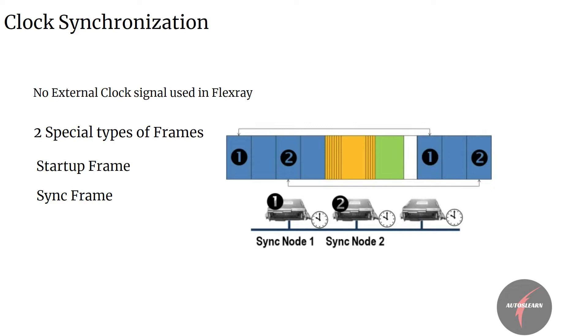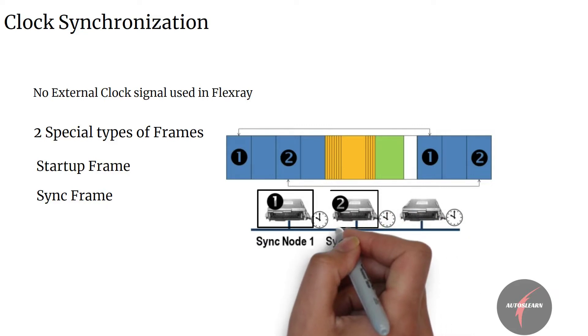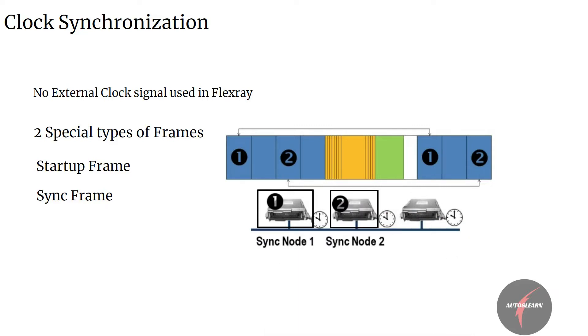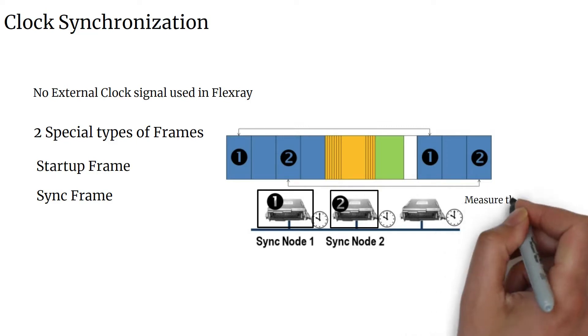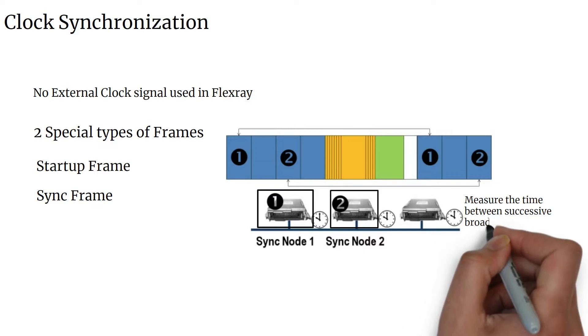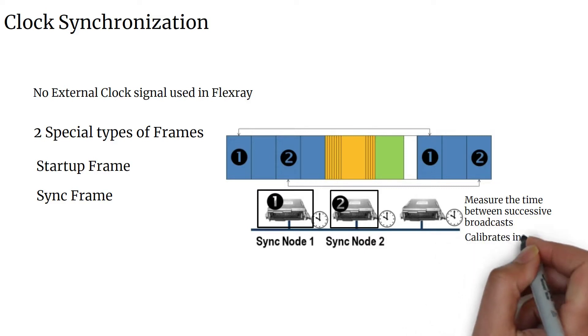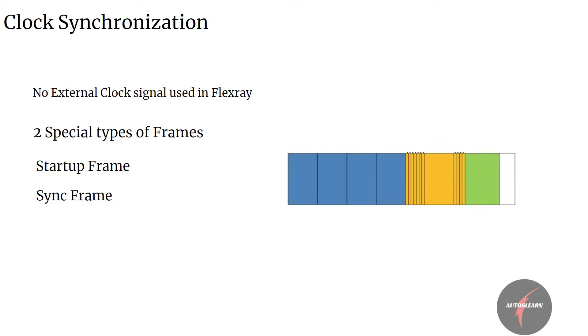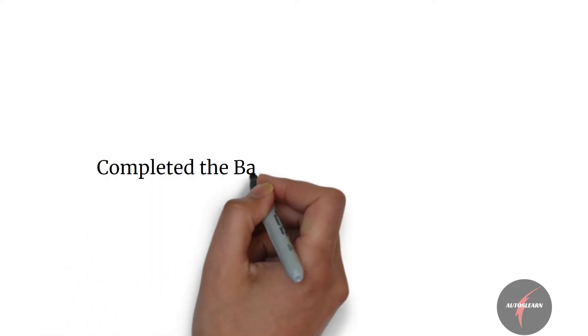Once the network is started, all the nodes must synchronize their internal oscillators to the network macro tick. This is done by using synchronization nodes which broadcast special sync frames when they are first turned on. Other nodes on the network wait for the sync frame to be broadcast and measure the time between successive broadcasts in order to calibrate their internal clock to FlexRay time. Once the network is synchronized and online, the network idle time is measured and used to adjust the clock from cycle to cycle to maintain synchronization. So with this, we have covered the basic concepts of FlexRay protocol.